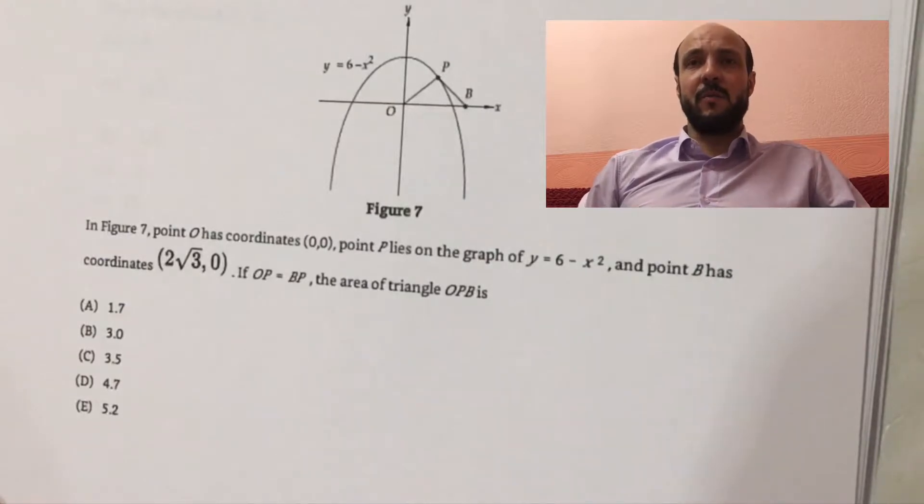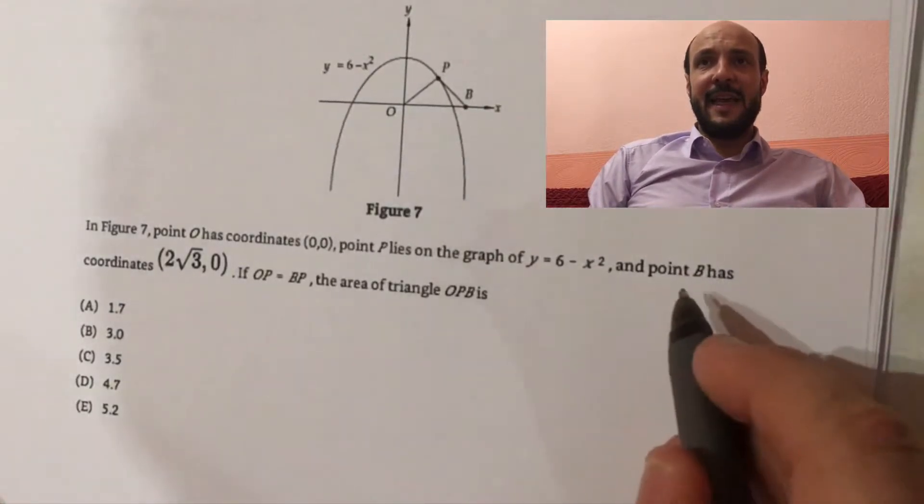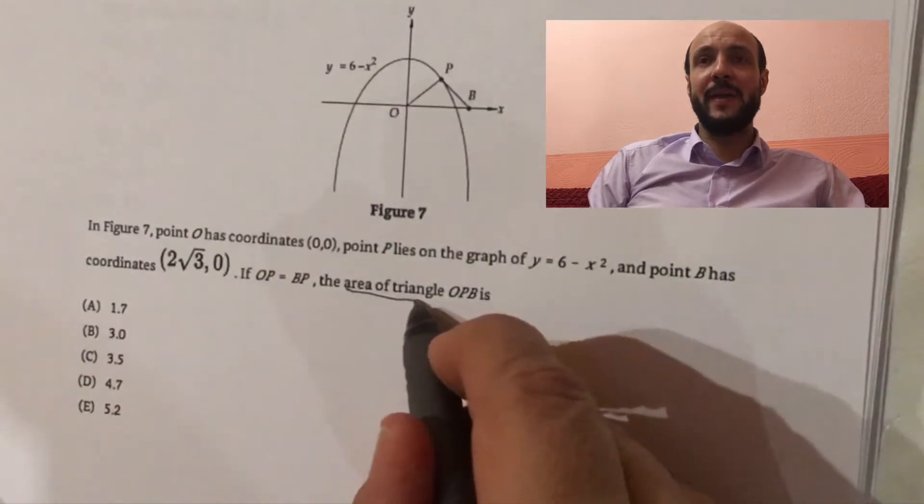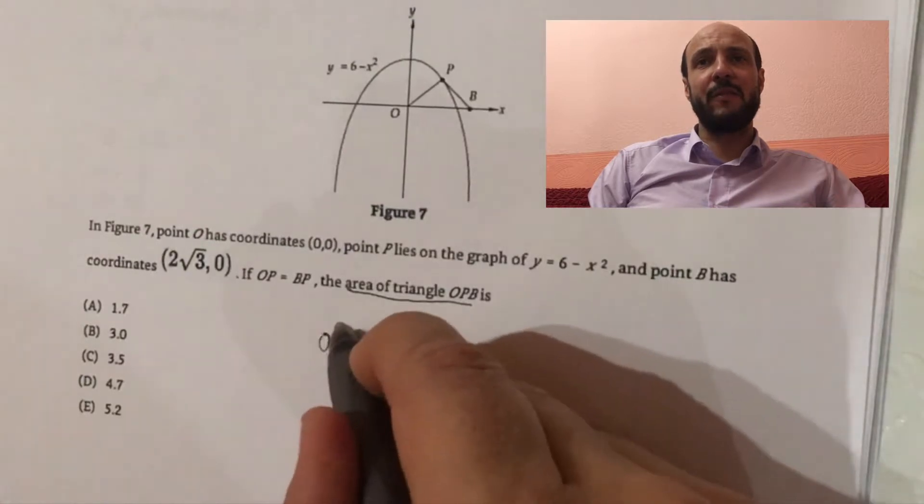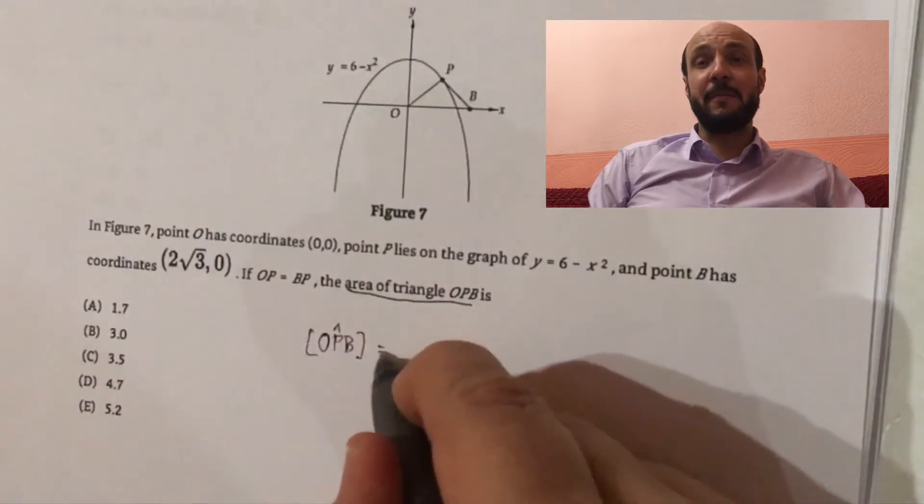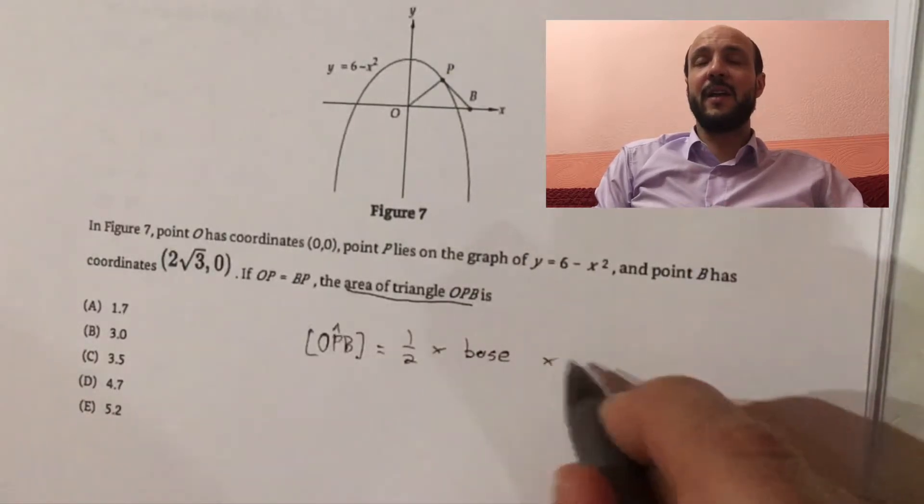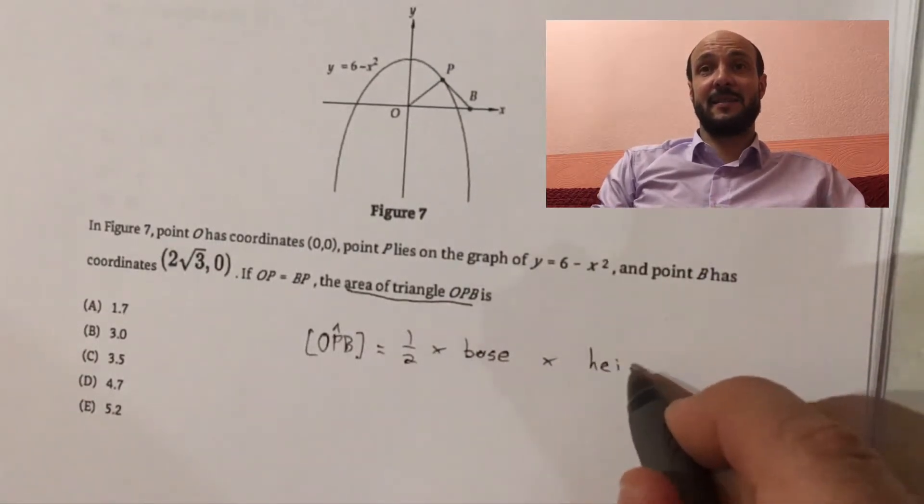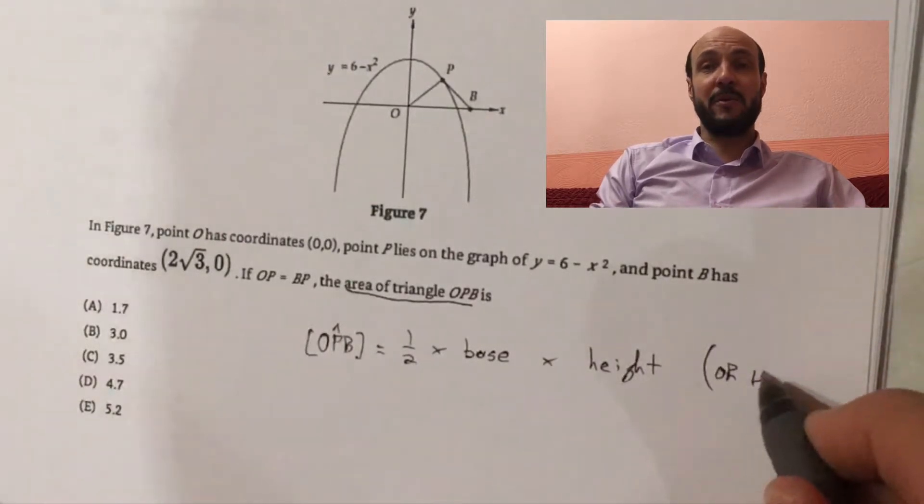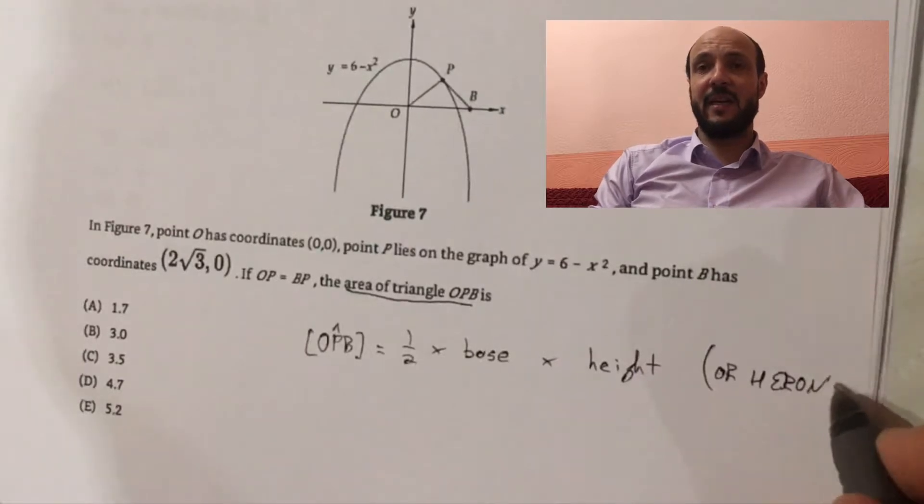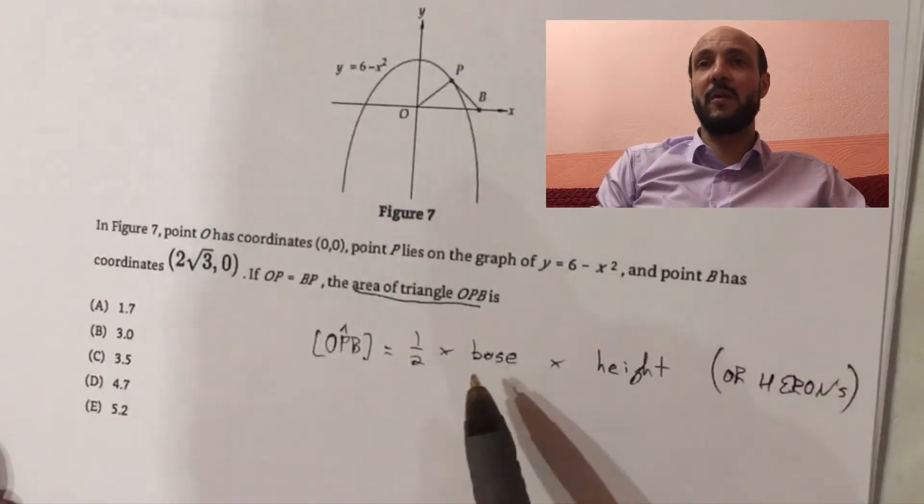So let's look at what we want to find. We want to find the area of triangle OPB. Now, there's more than one formula for the area of a triangle, but the most simple formula, the one we should always try and use first if we can, is half the base times the height. It's the first formula we talk regarding triangles. Another important one is Heron's formula, but let's try a half base times height first. If we don't need Heron, we won't look at it.